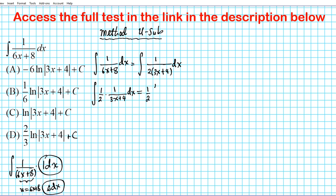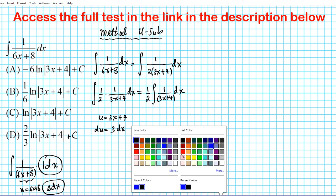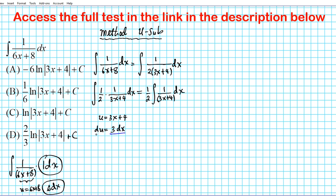Now we proceed with U-substitution. The inner function is going to be U, so let U equal three X plus four. We need to find DX. Differentiating both sides: dU equals three DX. Students make a lot of mistakes here — notice that dU equals three DX, so you do not simply replace DX with dU. Since three DX equals dU, we divide both sides by three to get DX equals dU over three.